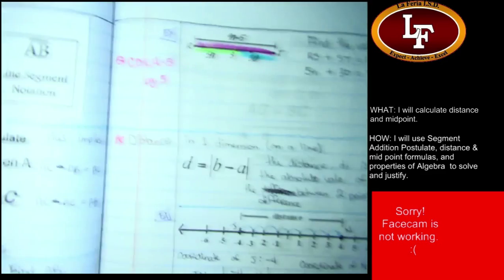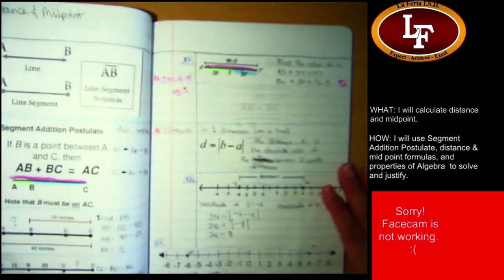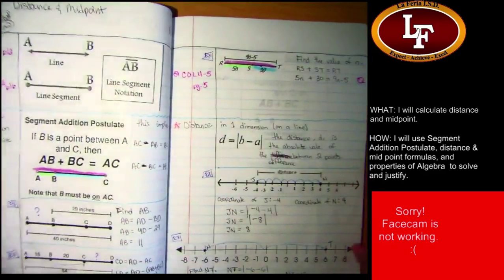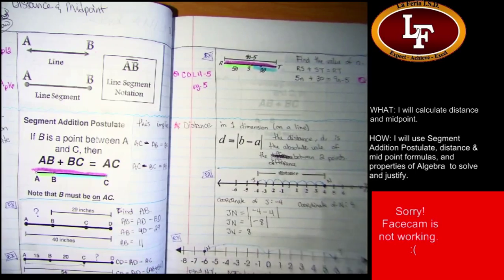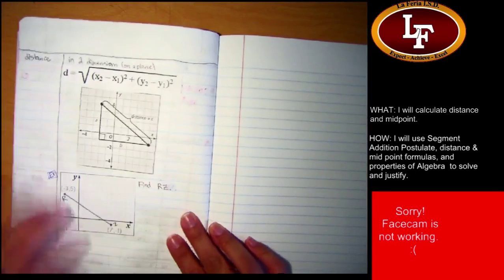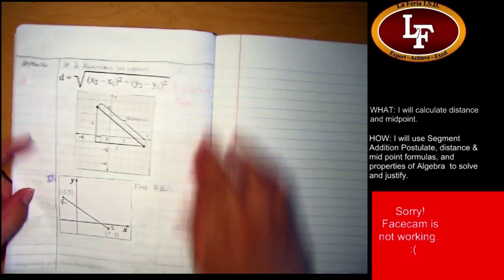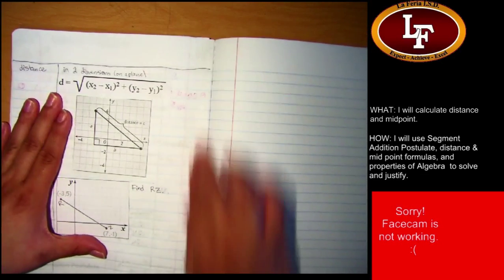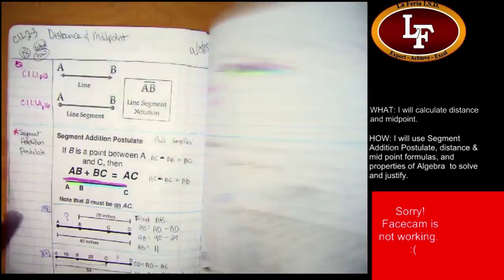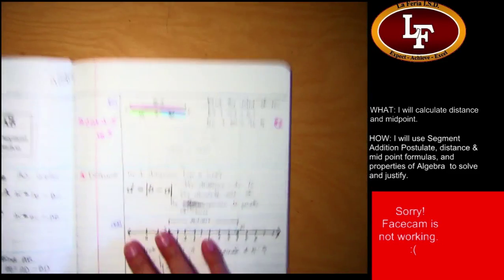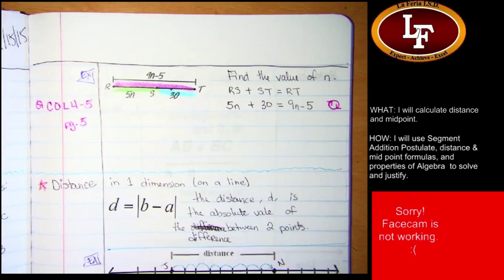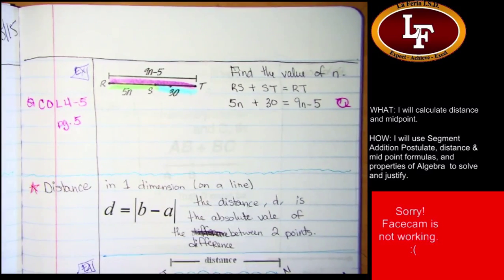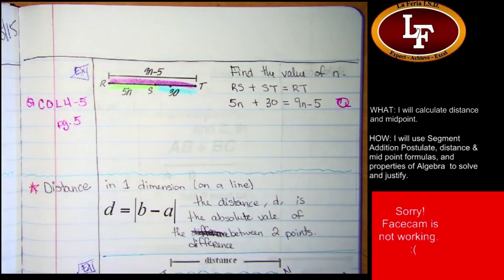All right, where we left off yesterday. Yesterday we did all of this stuff, segment edition postulate, distance in one dimension, distance on a line. And we started talking about... Oh, we had this one. This is what I was looking for. There was this example in your notes that was not finished for you during class, and you were asked to complete it on your own time.